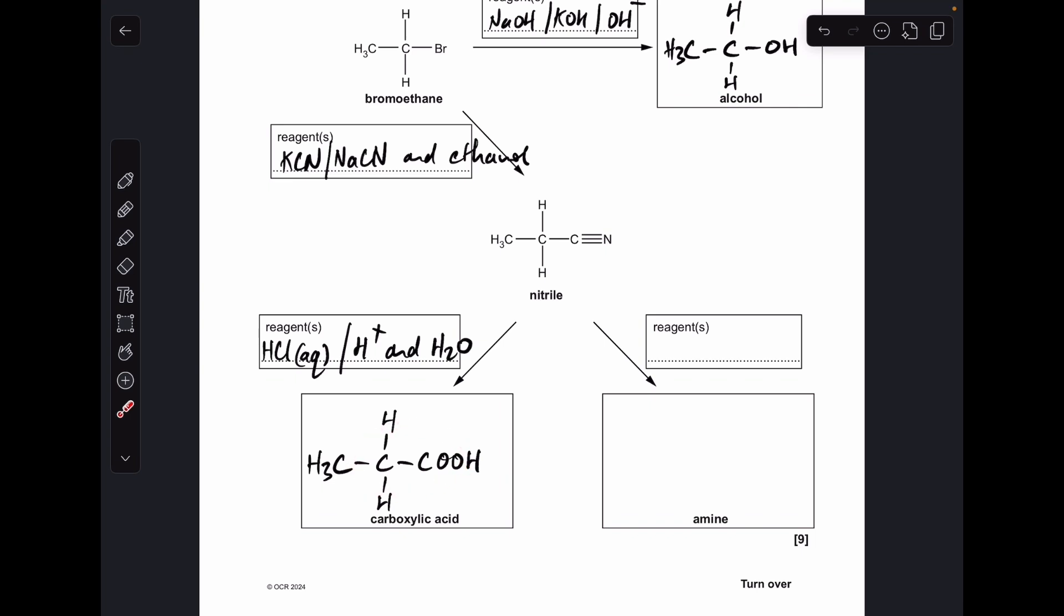Finally, to go from a nitrile to an amine, we react it with hydrogen and a nickel catalyst, and the amine produced is that one there. Very well done if you've got all nine marks for that.